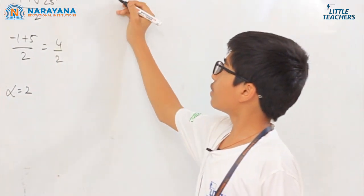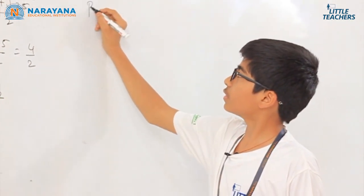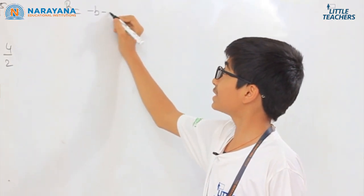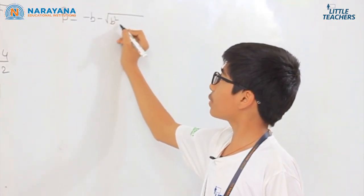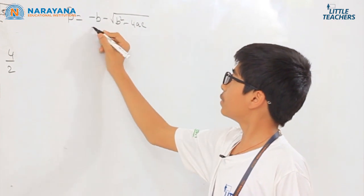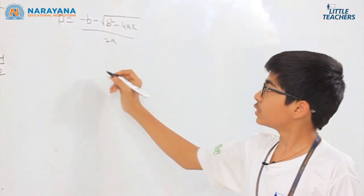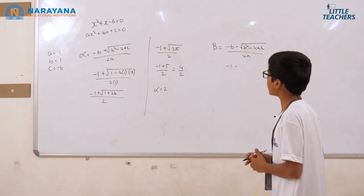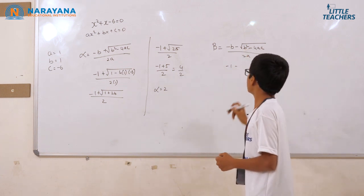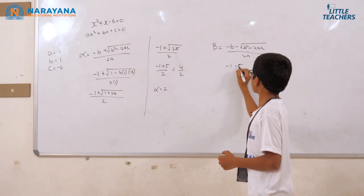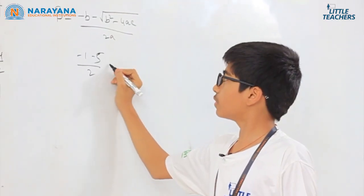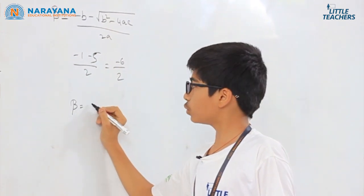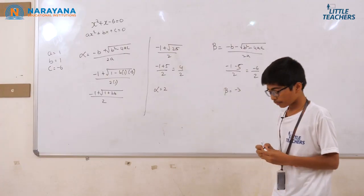Now let us find beta: beta = (−b − √(b² − 4ac)) / 2a. We already know √(b² − 4ac) = 5, so beta = (−1 − 5) / 2 = −6/2. Therefore, beta = −3. Thank you.